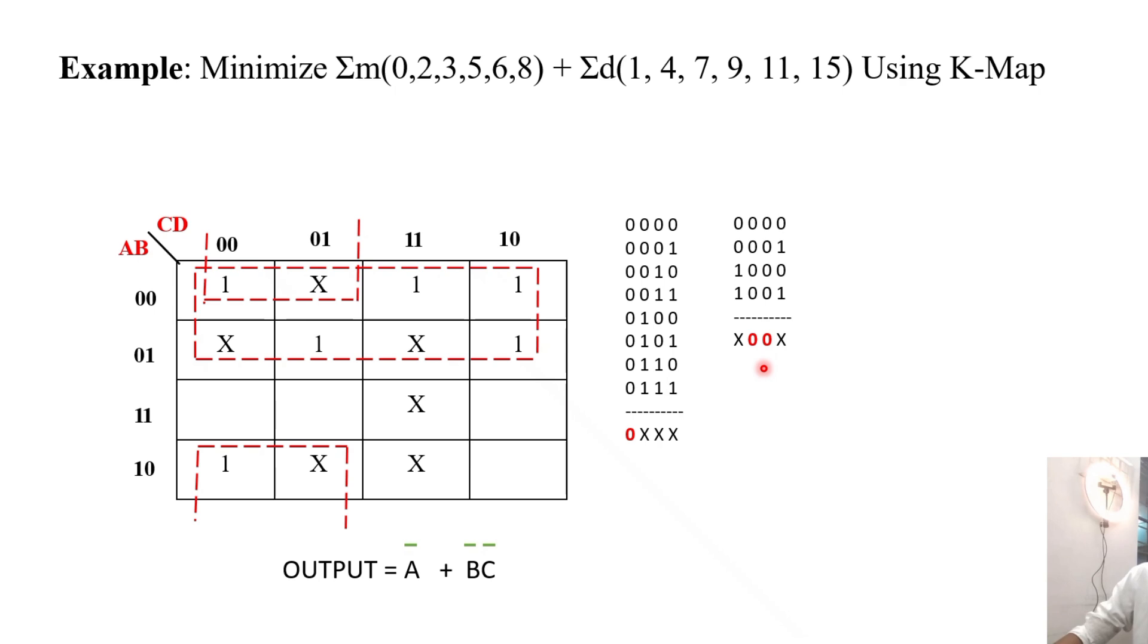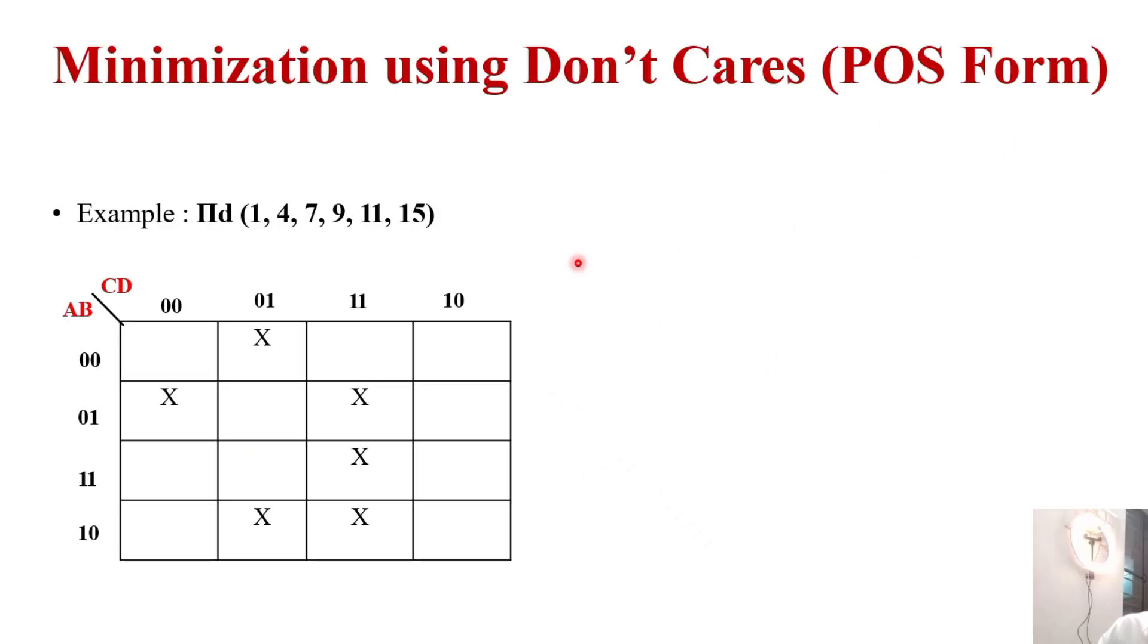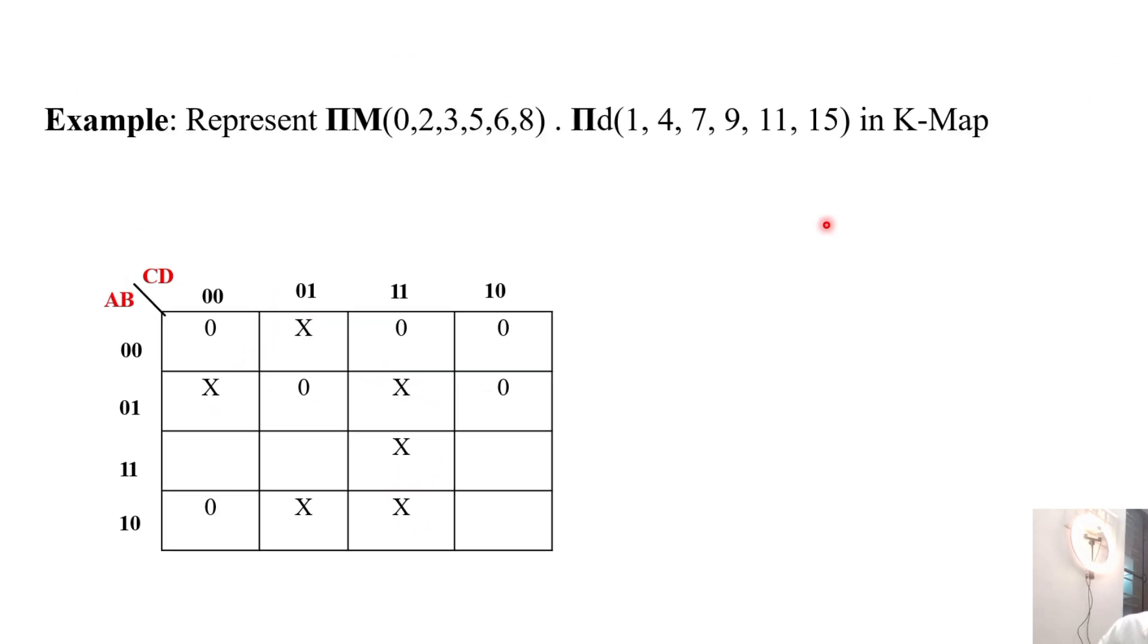Similarly for POS form, the same condition: whenever the don't care is provided, you should fill all the don't cares at 1, 4, 7, 9, 11, and 15. When a value is given in terms of maxterm and a product is given, place the zeros and do the grouping.